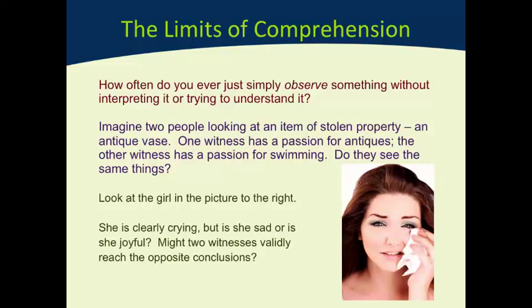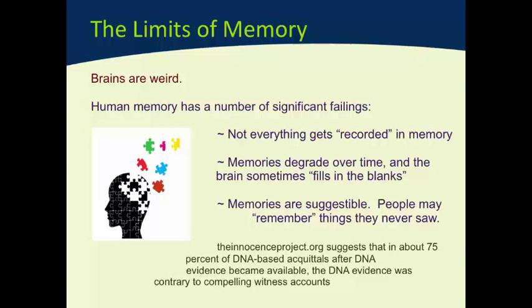So we've got a witness who has observed something. We know that the way they've observed it is probably different to the way someone else might have observed it. We now also know that the way they've comprehended what they've observed is likely to be different to what another witness comprehended. So two witnesses in the same place at the same time might already be giving quite different stories of what they saw. Oral evidence at this point is starting to look a little bit less reliable. Now let's make it worse — we introduce the limits of memory.